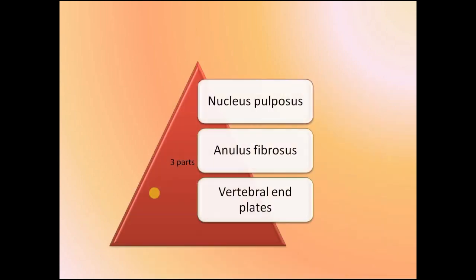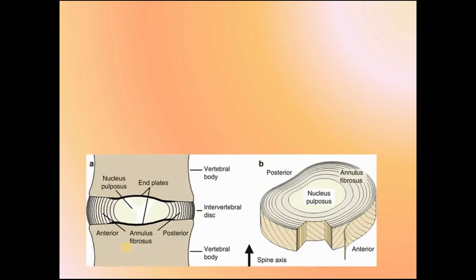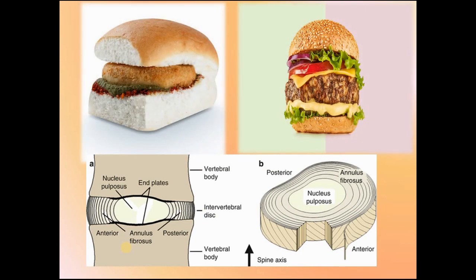The intervertebral disc is mainly composed of three parts: the nucleus pulposus, the annulus fibrosus, and the vertebral end plates. The nucleus pulposus is a gelatinous mass present in the center; the annulus fibrosus is the fibrous outer ring; and the vertebral end plates separate the vertebral bodies from above and below. It is just like a vada pav or a burger — the bread is like the end plate, the patty is like the nucleus pulposus, and around the patty is the annulus fibrosus.